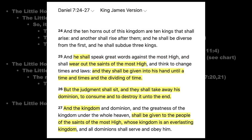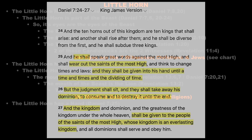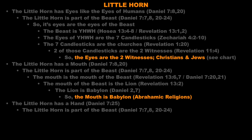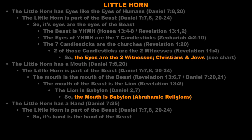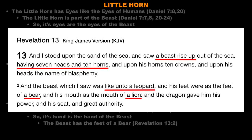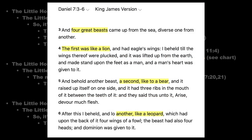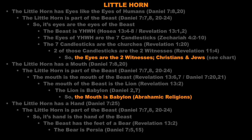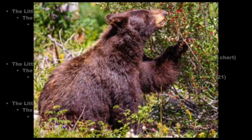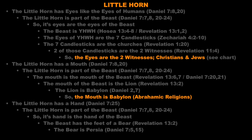In Daniel 7:25 we are told the little horn also has a hand. The hand of the little horn is the hand of the beast. Revelation 13:2 says the beast has the feet of the bear. After decoding the riddle in Daniel 7:5 and 15, we know the bear is Persia. A bear uses its front two paws like hands, so the hand of the beast is actually a bear paw — and the bear is Persia. Therefore, the hand of the little horn is Persia.